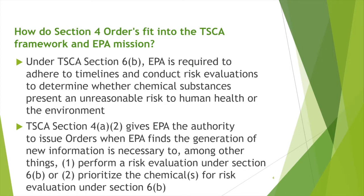How do Section 4 orders fit into the TSCA framework and EPA's mission? Under TSCA Section 6b, EPA is required to adhere to timelines and conduct risk evaluations to determine whether or not chemical substances present an unreasonable risk to human health or the environment. TSCA Section 4A2 gives EPA the authority to issue orders when EPA finds that the generation of new information is necessary to perform a risk evaluation under TSCA Section 6b, or to prioritize the chemicals for risk evaluation under Section 6b.